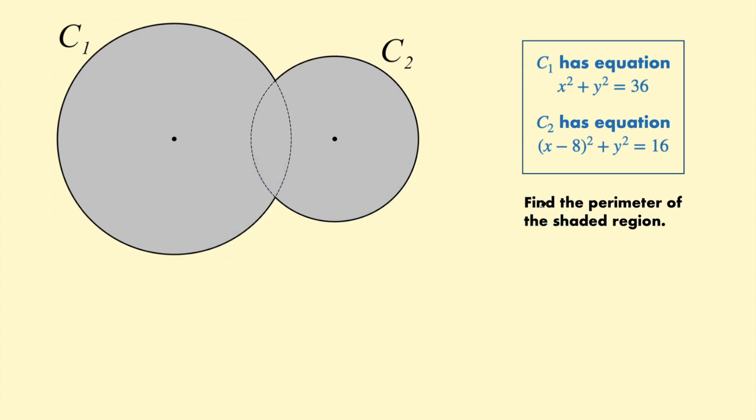So in this question we're asked to find the perimeter of the shaded region and we're given the equations of circle one and circle two. To find this length around the outside, this is going to be the major arc of the large circle and the major arc of the small circle. So we're going to have to find arc lengths. The way you find an arc length of a circle is you need the angle.